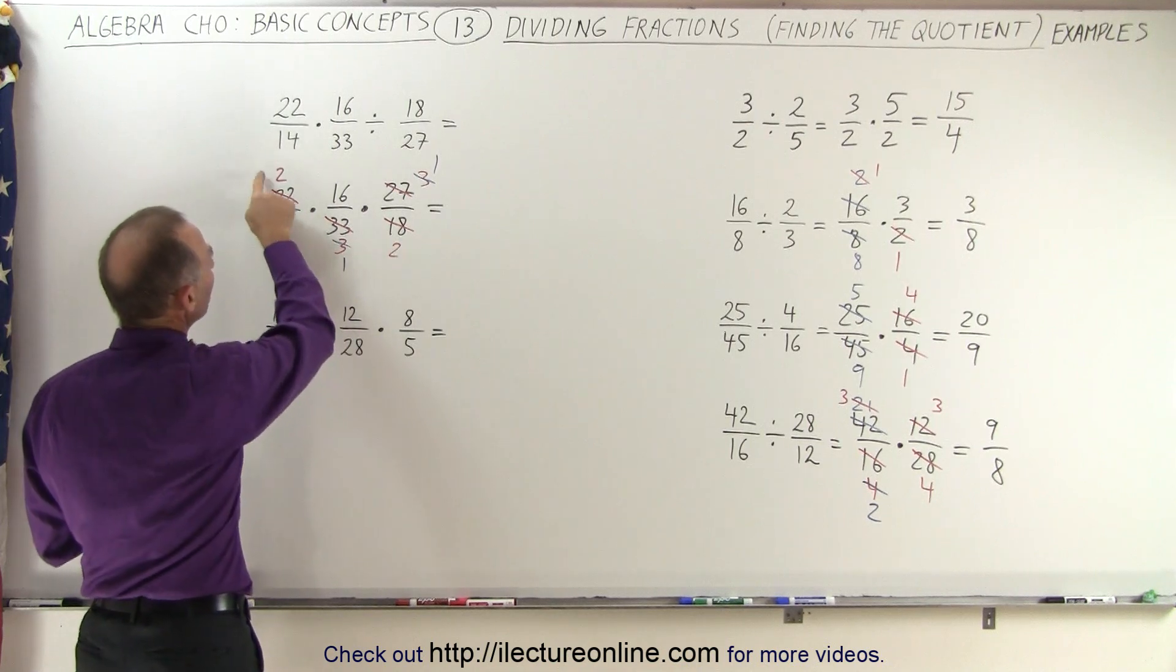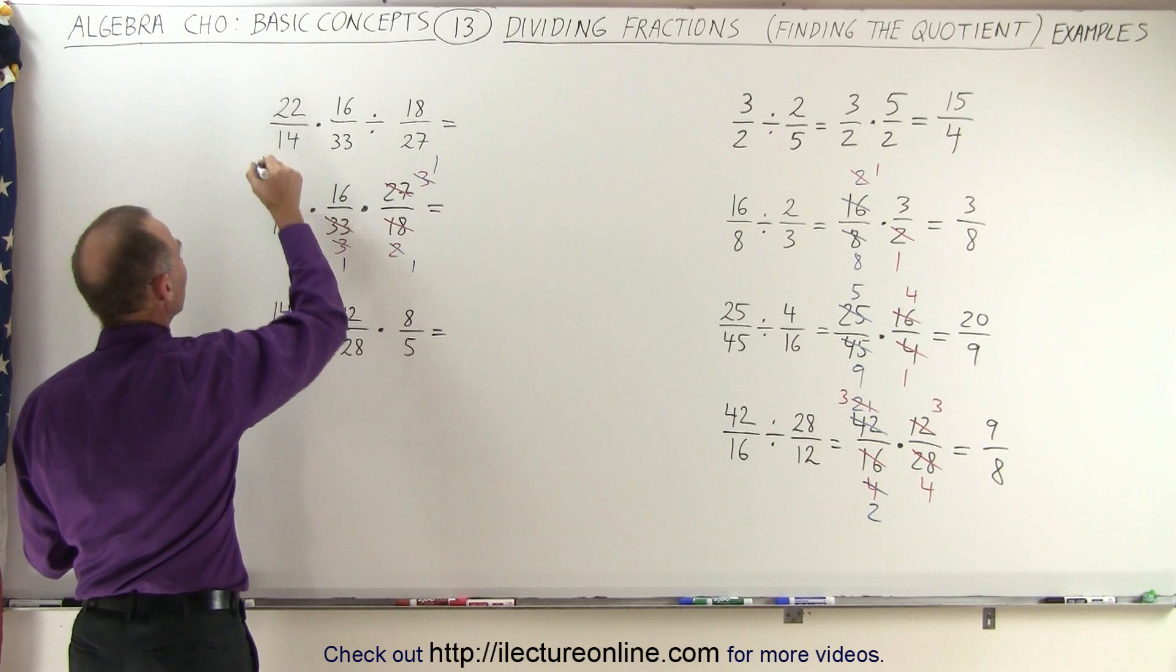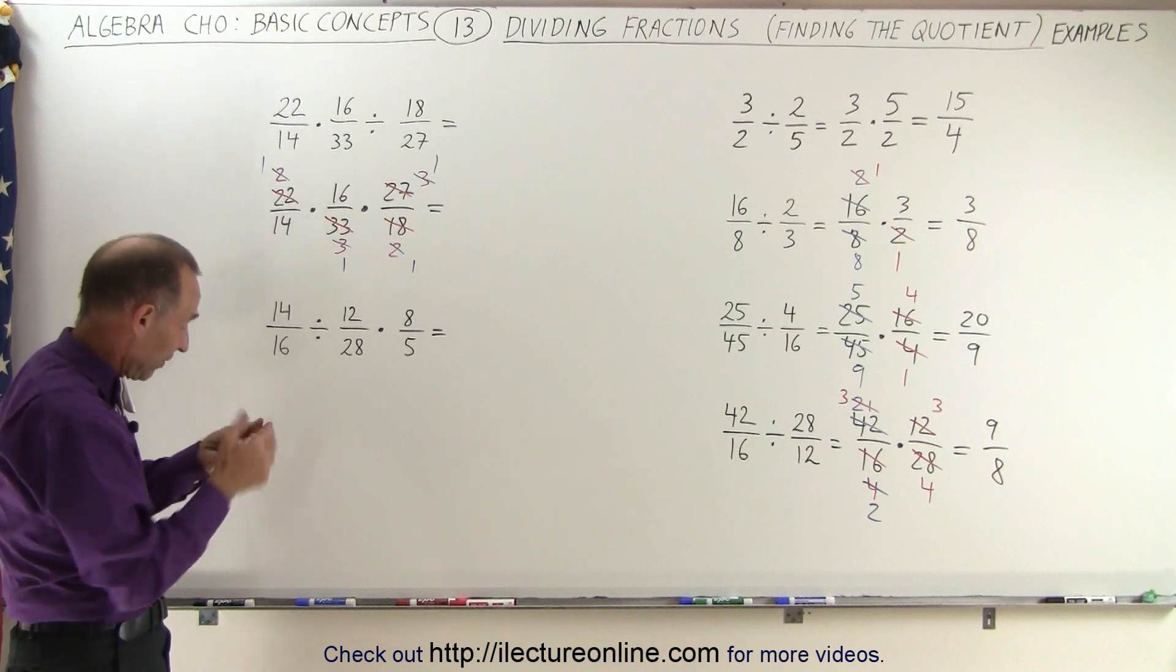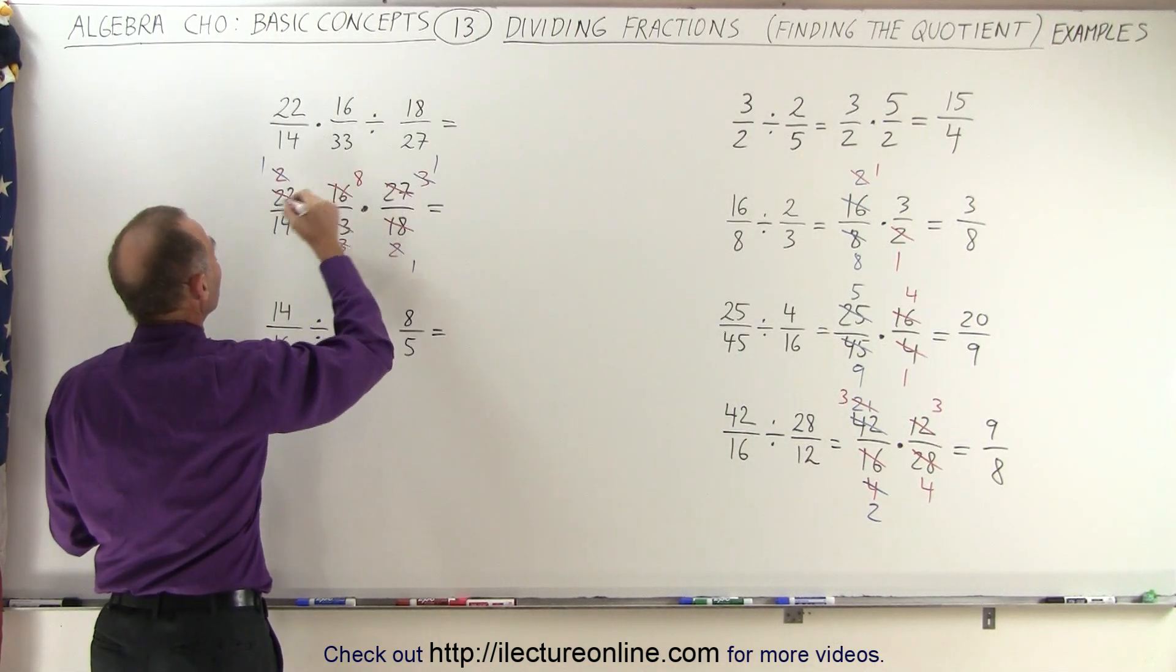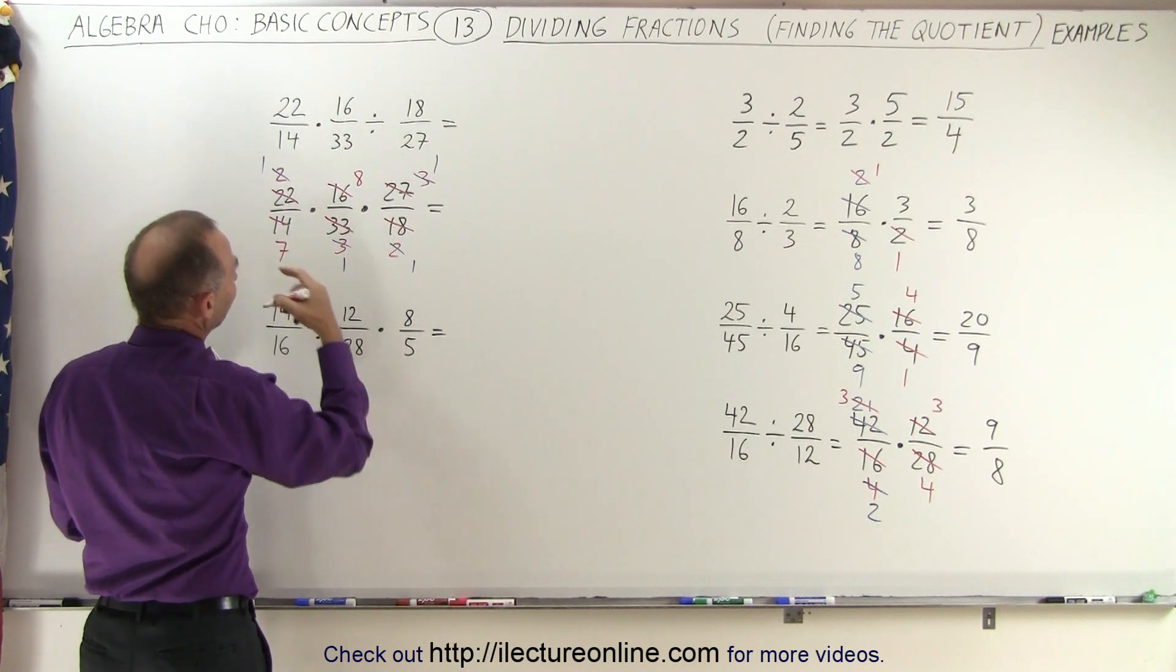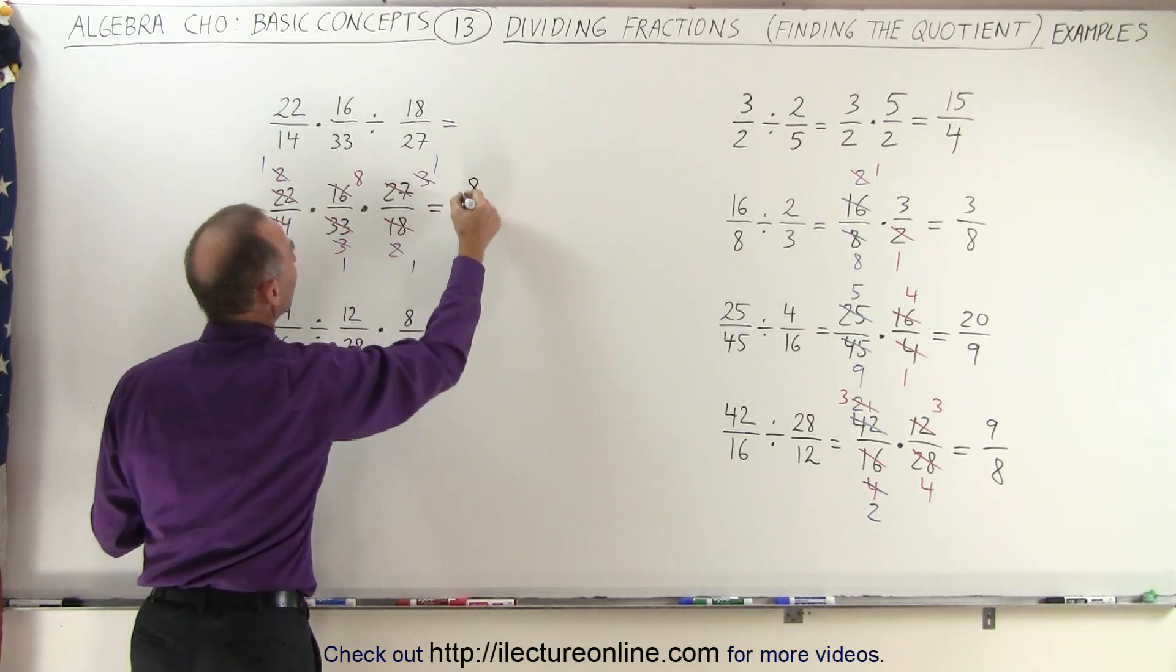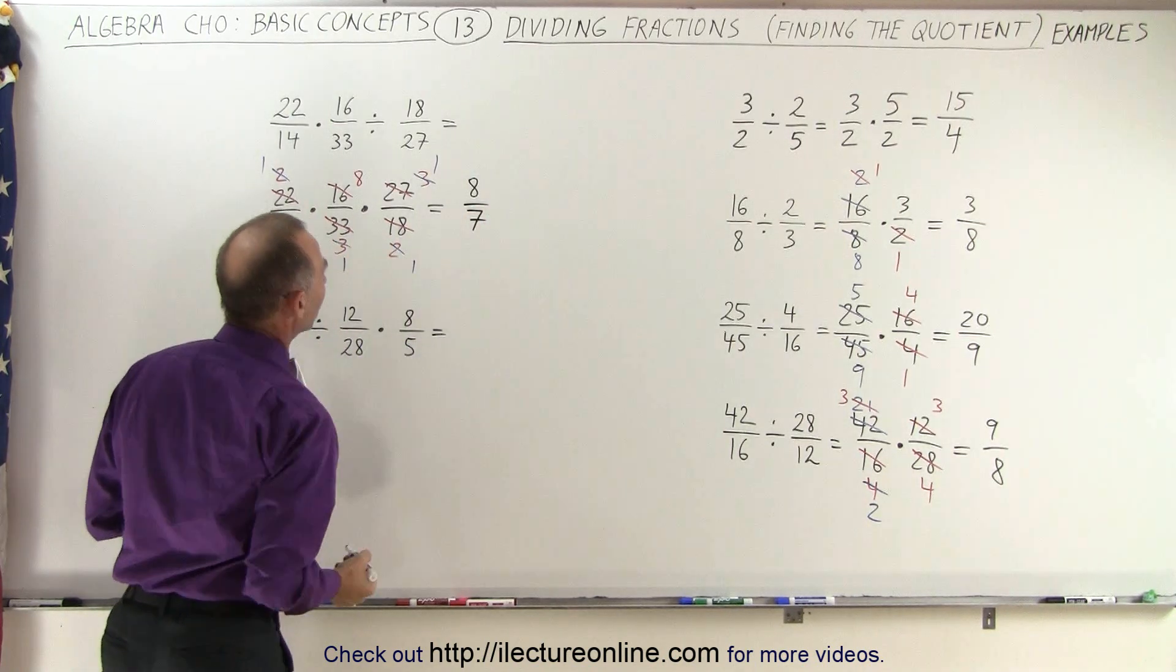Not quite done yet. We have a 2 here and a 2 there. So this 2 divided by 2 is 1, this 2 divided by 2 is a 1. And all we have left is a 16 and a 14. They're both even, so we can divide the numerator by 2, which gives us an 8, and we can divide the denominator by 2, which gives us a 7. Since that's a prime number, I think we've gone as far as we can go. So the answer then becomes 1 times 8 times 1, which is 8 in the numerator, and 7 times 1 times 1, which is 7 in the denominator.